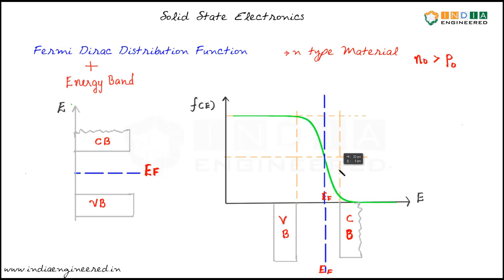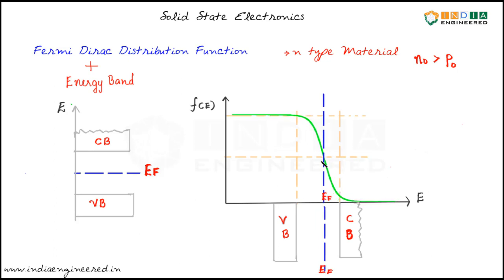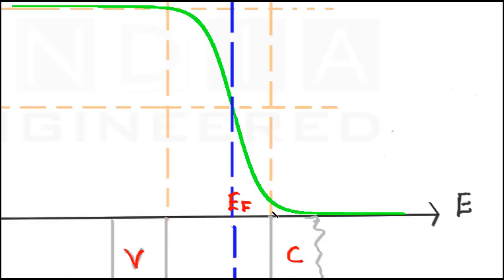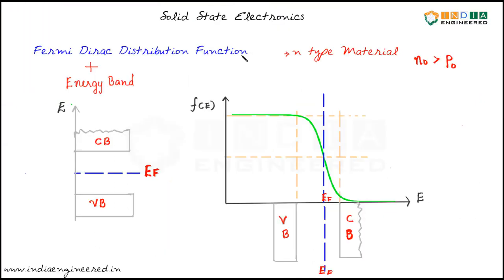If the Fermi level moves closer to the conduction band — if you zoom further — we can see that the probability of finding electrons in the conduction band has really increased and that of holes has decreased. So we can say that in n-type material, the Fermi level lies closer to the conduction band.